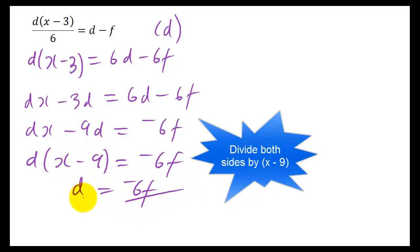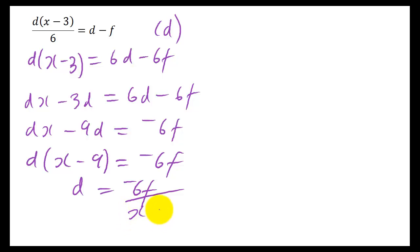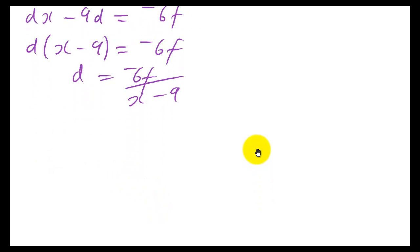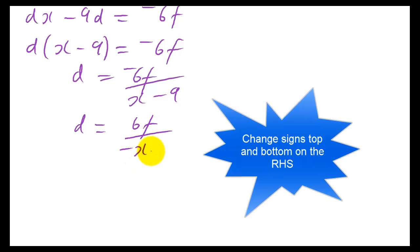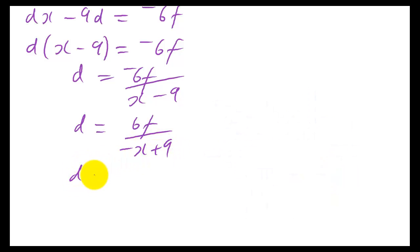And doing that on this side means you're just left with D. On this side you get X minus 9 on the bottom. Now we like to get rid of negatives when we can. So let's just change all the signs top and bottom. And we get 6F and you get a minus X plus 9. Now if you rearrange the order of those, so you put the 9 here and minus X there, then you don't have any negatives at the front and it just looks a bit neater. And there you go.